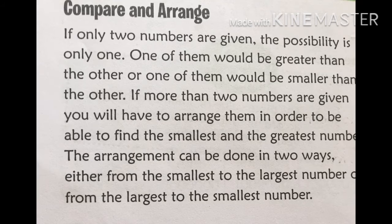If only two numbers are given, the possibility is only one. One of them would be greater than the other or one of them would be smaller than the other. If more than two numbers are given, you will have to arrange them in order to be able to find the smallest and the greatest number. The arrangement can be done in two ways, either from the smallest to the largest number or from the largest to the smallest number.